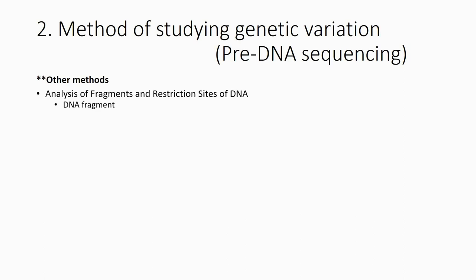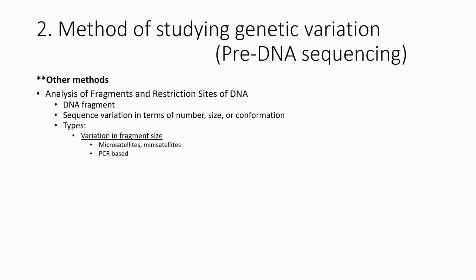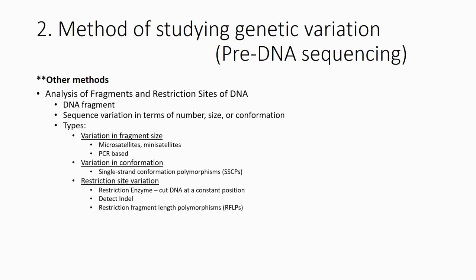There are other methods to analyze fragment variation — for example, microsatellites and minisatellites. These are PCR-based methods where you amplify certain regions. With one pair of primers that amplifies two regions, you get two fragments; in another sample, you may only amplify one region and get one fragment. With PCR you don't need a lot of starting material. These methods provide data for analyzing population genetics and conservation genetics. There are also methods looking at variation in conformation at restriction sites, including techniques like RAPD.